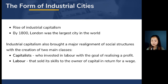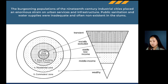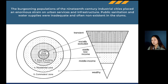Regarding the form of industrial cities, the rise of industrial capitalism had transformed society. By 1800, London was the largest city in the world. Industrial capitalism brought a major realignment of social structures with the creation of two main classes: the capitalists who invested in labor with the goal of realizing a profit, and the labor that sold its skills to the owner of capital in return for a wage. The rapid joining of populations in 19th century industrial cities placed an enormous strain on urban services and infrastructure, with public sanitation and water supplies often inadequate or non-existent in the slums.